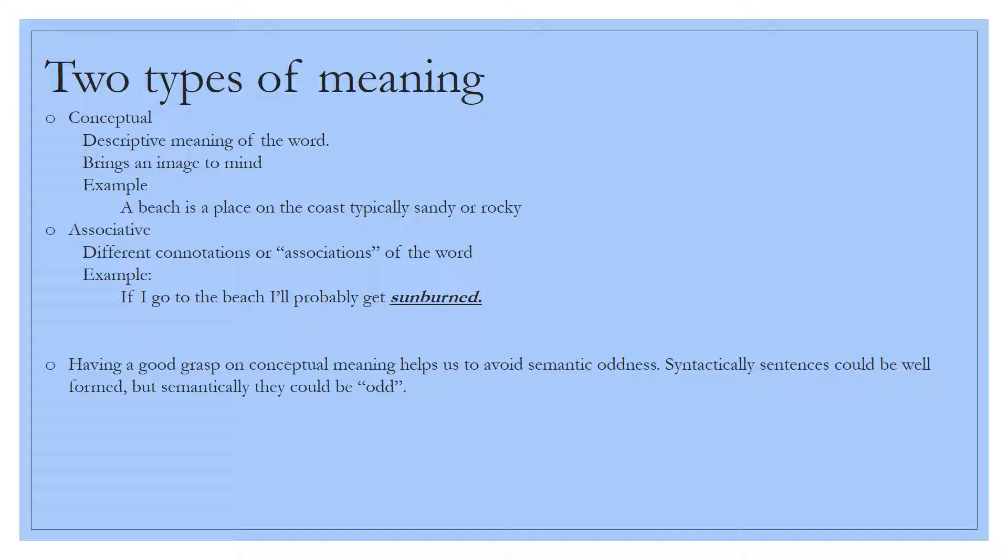Having a good grasp on conceptual meaning versus associative meaning helps us to avoid semantic oddness. Syntactically, sentences can be well formed as far as noun phrases, verb phrases, prepositional phrases, all of the things that we've learned in the previous section, but semantically they could still be odd. You can say something along the lines of this sandwich ate the boy, even though syntactically it's correct. It just sounds odd. You know that a sandwich cannot eat the boy. It'd have to be vice versa and the boy would have to eat the sandwich.